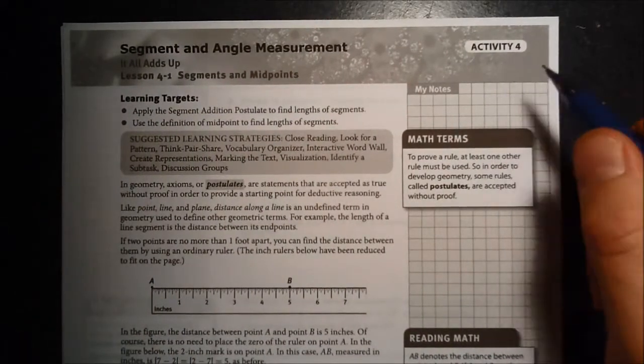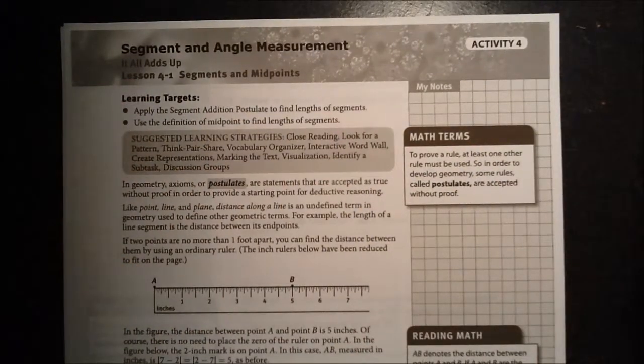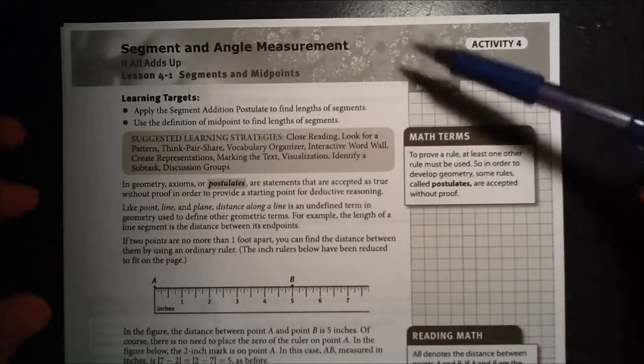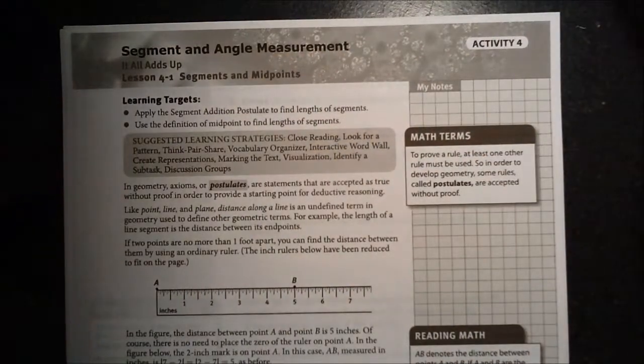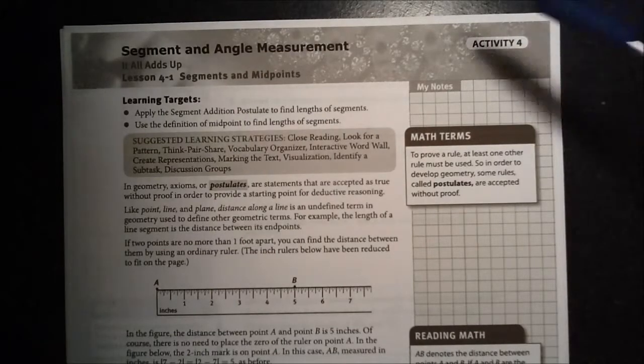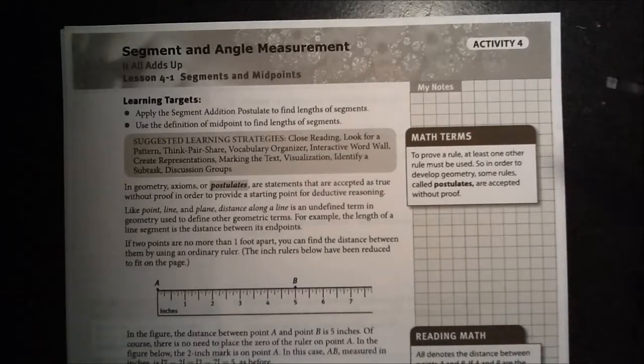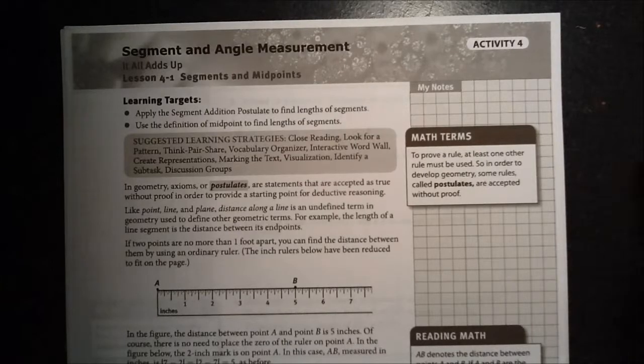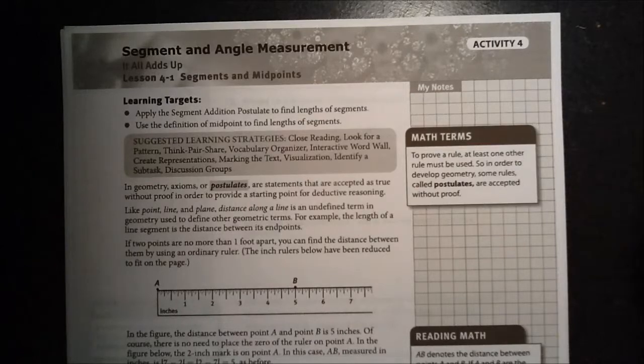Already this is Activity 4 entitled Segment and Angle Measurements. It all adds up. And as we go throughout this activity, we need to keep it as simple as that. Just remember that it all adds up. And that these two lessons, lesson 4-1 and 4-2, we can summarize the entire two lessons into one phrase: part plus part equals the whole. And as long as we keep it simple and think of it as that and approach all the problems with that simplicity, we shouldn't have any issue with any of these topics.